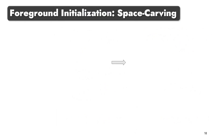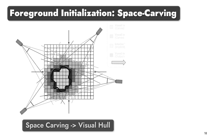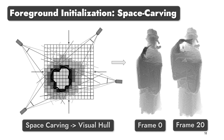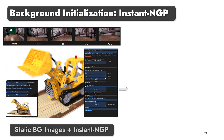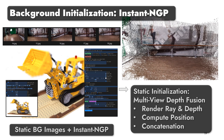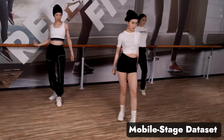We leverage existing multi-view reconstruction methods to initialize the point clouds. For dynamic regions, we use segmentation methods to obtain their masks and input images, and utilize the space carving algorithm to extract their coarse geometry. For static background regions, we leverage foreground masks to compute the mask-weighted average of background pixels along all frames, producing background images without the foreground content. Then an Instant-NGP model is trained on these images, from which we obtain the initial point clouds. Here we show the real-time rendering results of our method on the mobile stage dataset.